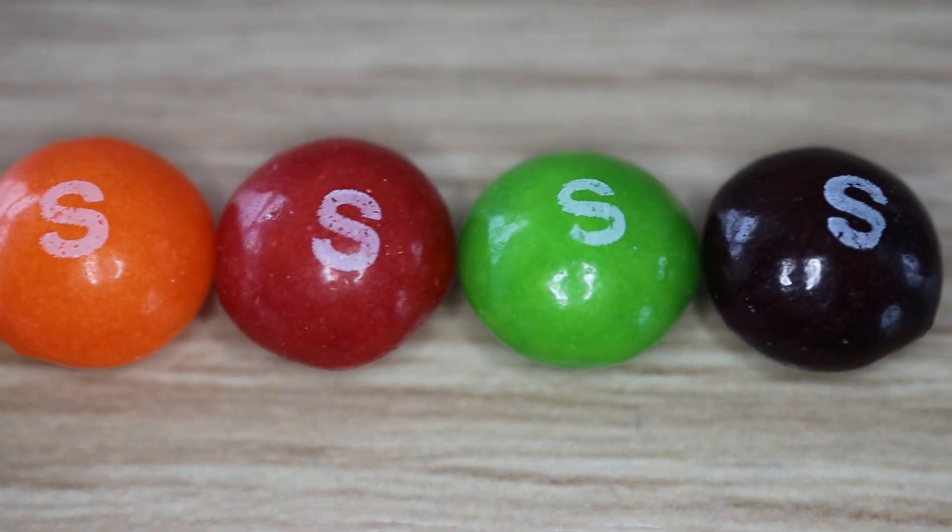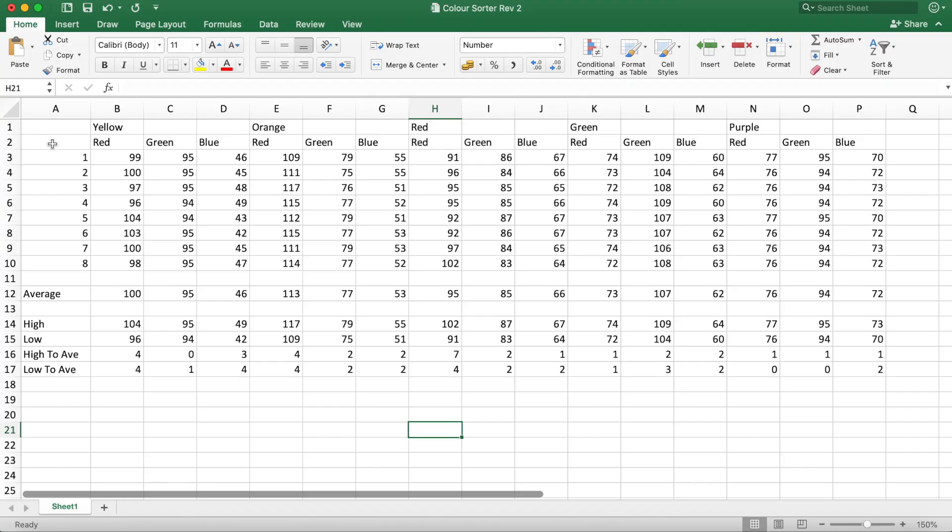In order to get the code working correctly we first need to take some samples of the skittle colours to establish the set points for the code. To do this I took RGB readings for 8 of each colour skittle and recorded them to work out the average as well as the range of fluctuation above and below this value.